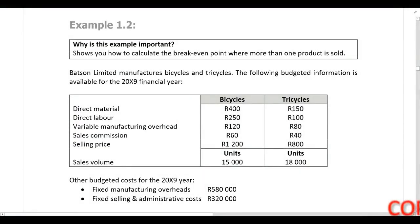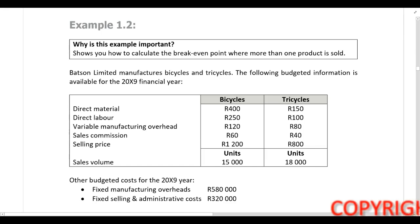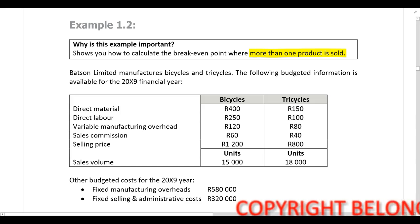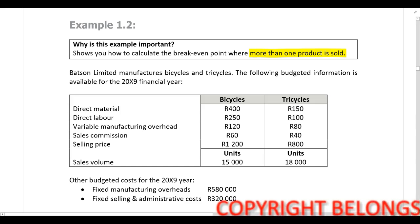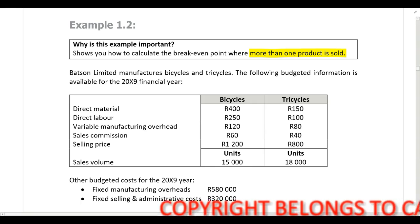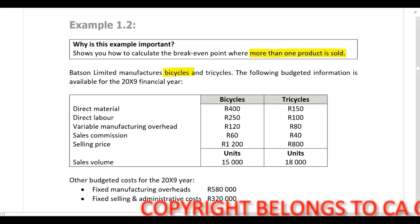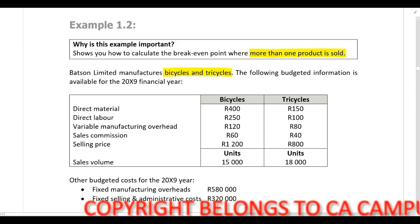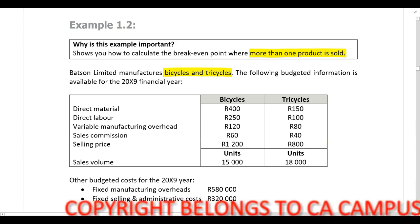In this example we are going to calculate the break-even point for a company that sells more than one product. We have information relating to Baxon Limited, which manufactures bicycles and tricycles — two different products.